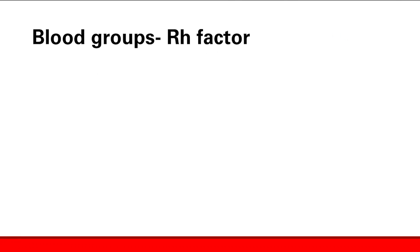Now we're going to talk about the RH factor. Red blood cells can also have the RH factor — you can either have it or you don't. If you have it, you're RH positive; if you don't, you're RH negative. This is important during pregnancy, and this isn't like the ABO blood types where everybody develops antibodies. If you are RH negative, you're not going to have antibodies unless you get exposed to RH positive blood, and this happens in pregnancy.